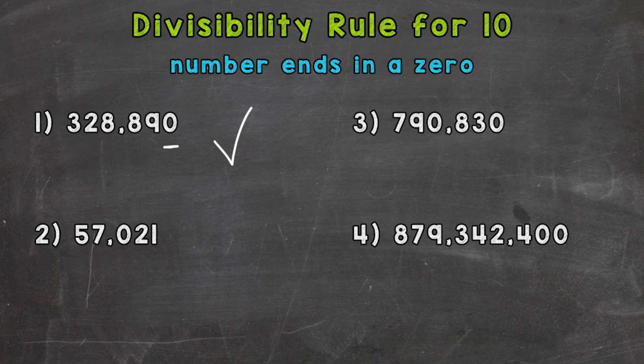On to number two, 57,021. Does that number end in a zero? No, so it's not divisible by 10.